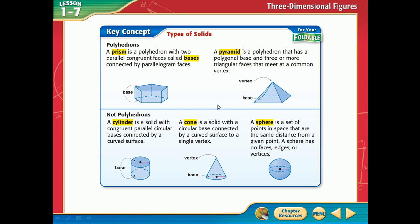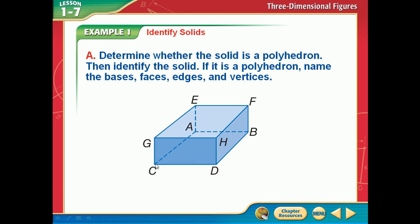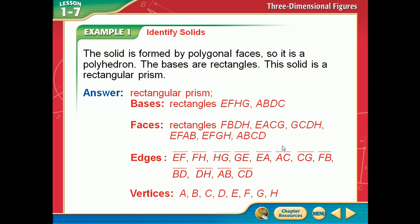It's a lot better using this program because I wouldn't be able to draw all those things that pretty. Let's keep going. It says: determine whether it's a polyhedron, then identify the solid. Is it a polyhedron? Yes. It's a rectangular prism. Name the bases — what is it sitting on? A rectangle: A, C, D, B. And the other base: E, G, H, F. The vertices are all the points where lines come to a point, and all the edges.